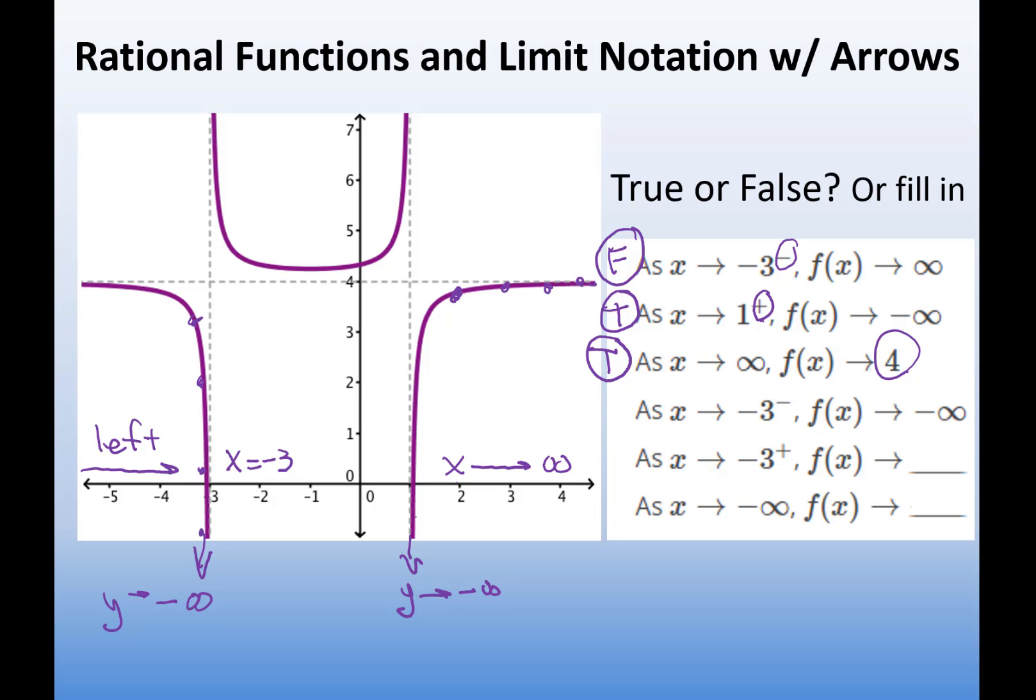Okay, one more true-false. Let's look at x going to negative 3 again. So let's go back here. Rethink this problem. So, with this statement, I'm supposed to be looking at negative 3. Okay, here's negative 3. X is negative 3. I'm approaching it from the left. That's what the negative over here is telling me.